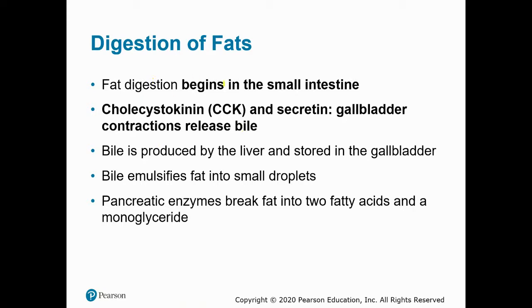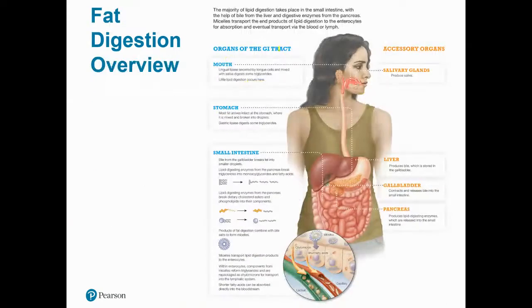We'll review that fat digestion primarily takes place in the small intestine. But it doesn't really begin there — we have lingual lipase, lingual referring to the tongue. The LIP in lipase refers to lipids, and the -ASE refers to enzymes. So these are lipid-digesting enzymes that do occur in the mouth.